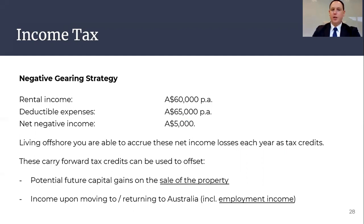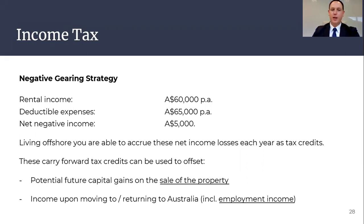From the example here, you can see the cash flow is in a negative position, so there will be a need to fund the ongoing expenses from an additional source. Although this negative cash flow amount can be used for tax purposes. In Australia, this tax loss may be used to offset other Australian income, such as your employment income.